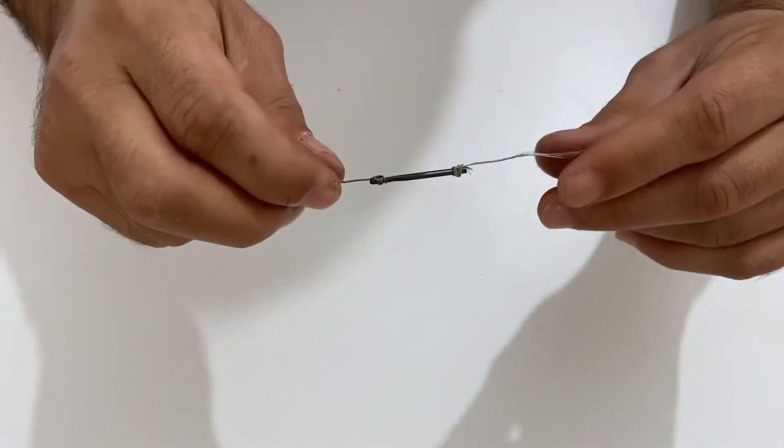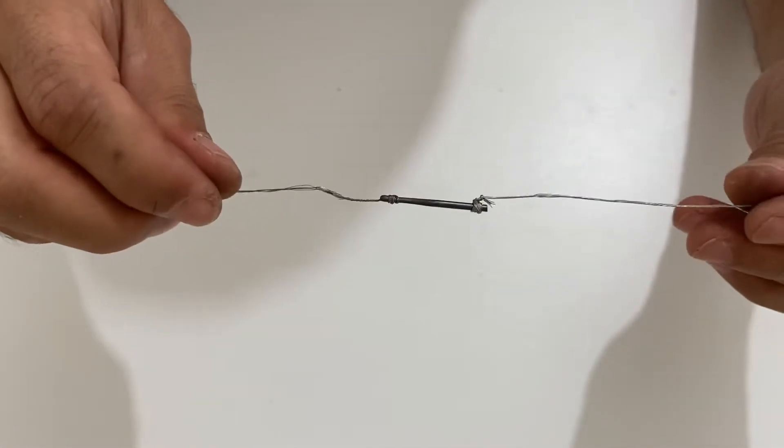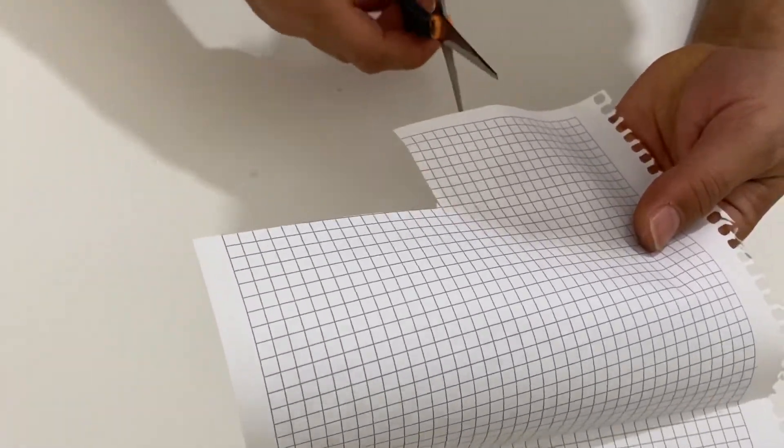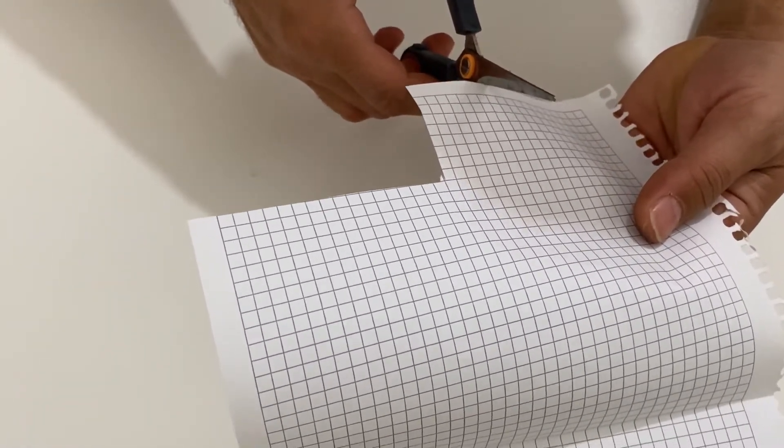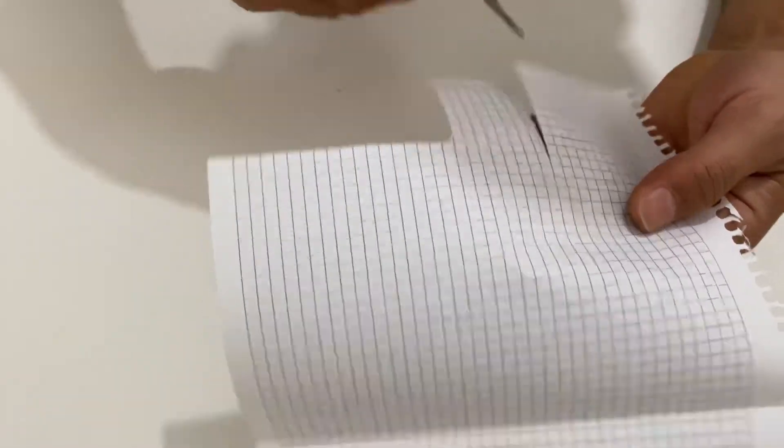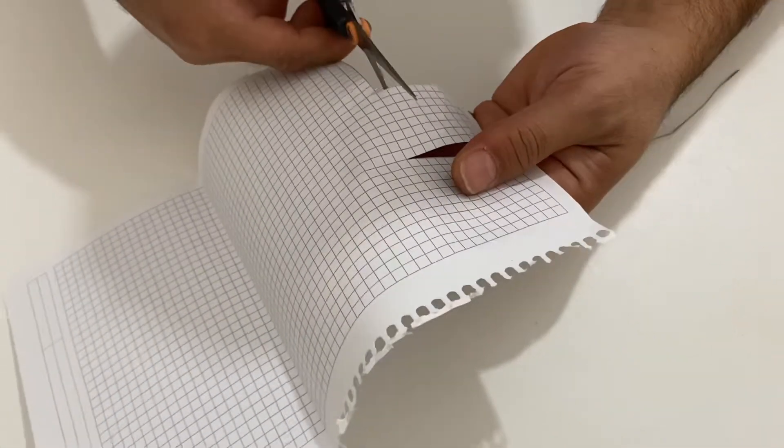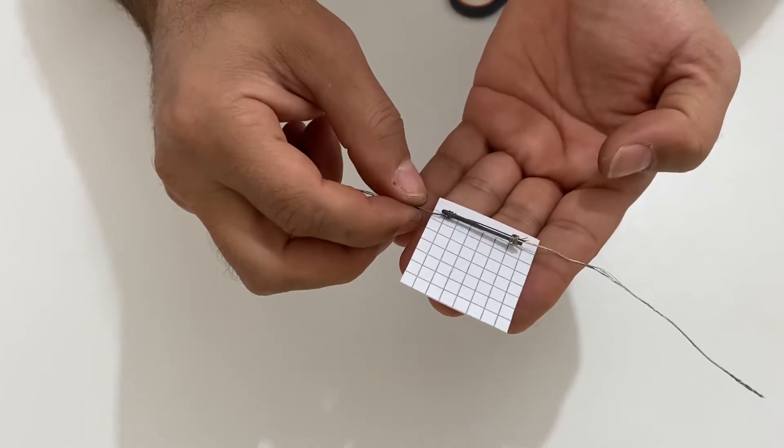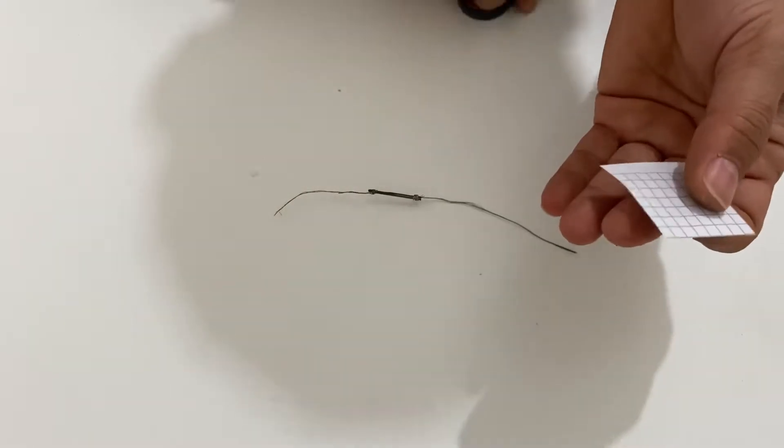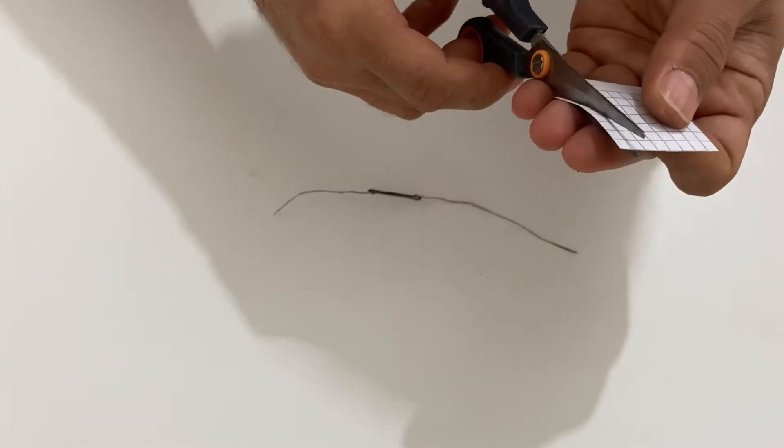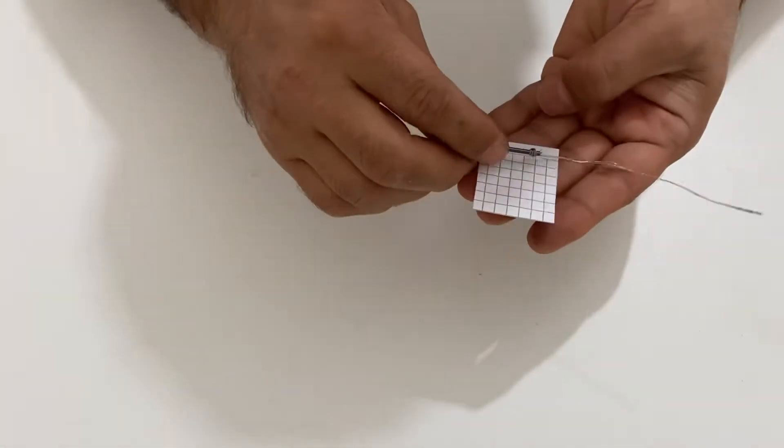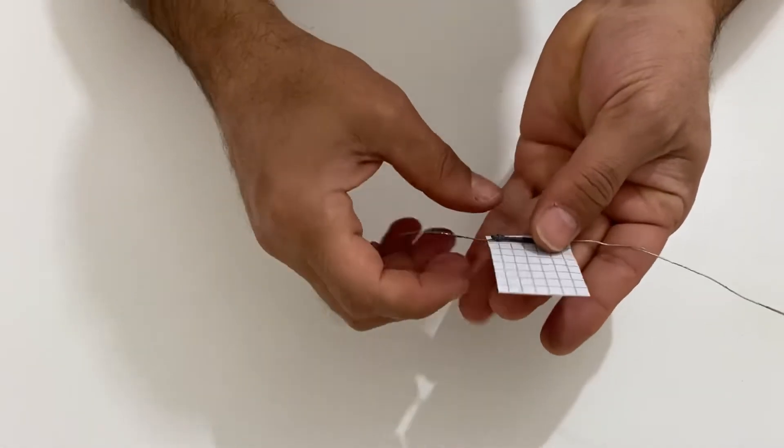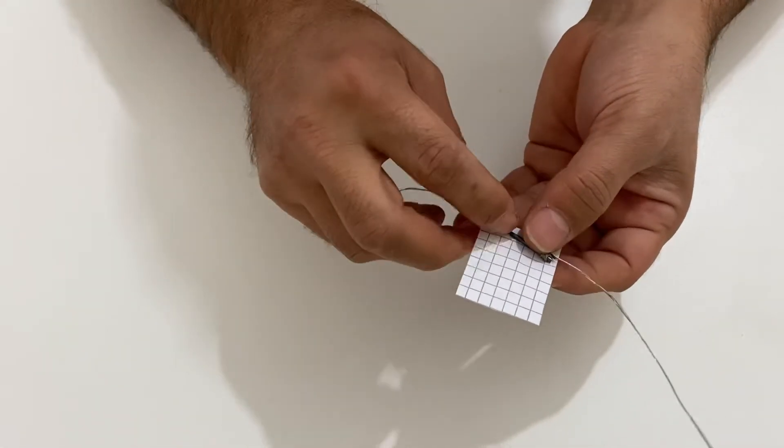Okay, just like this. Now I'm going to take a piece of paper. Okay, our paper should be the same size with the graphite stick. Okay, now I'm going to roll the paper around the graphite stick.